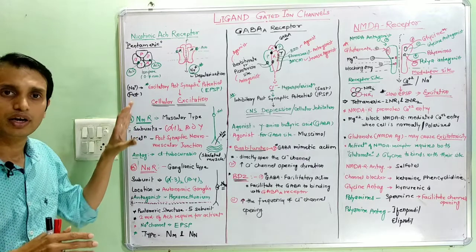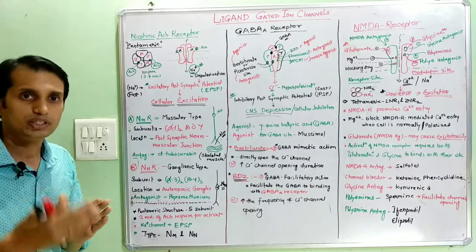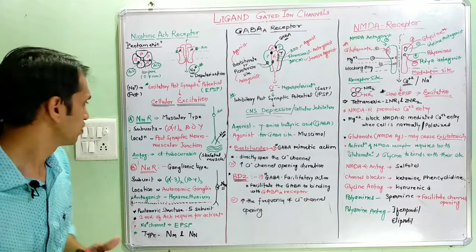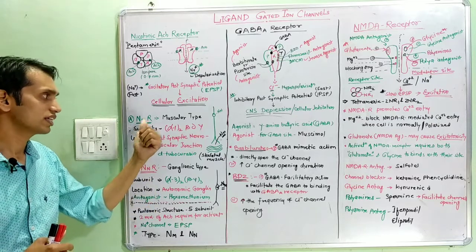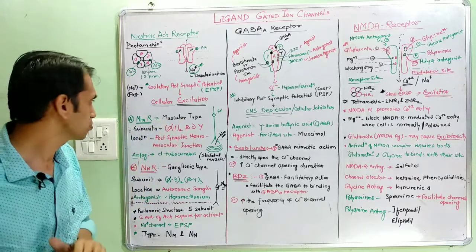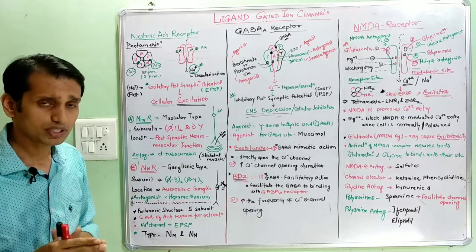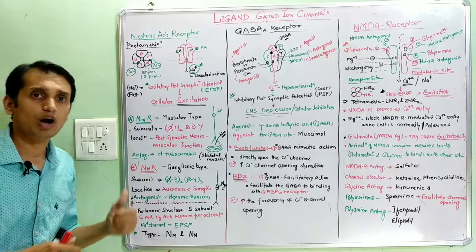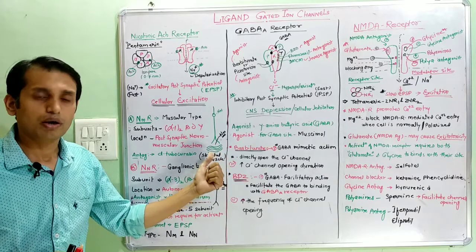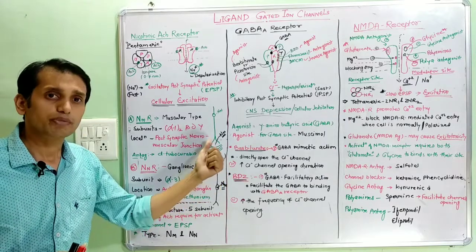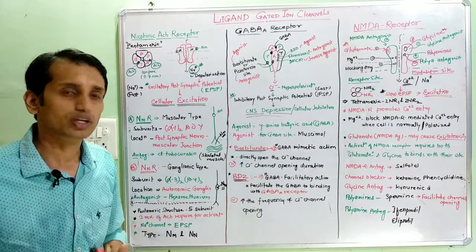Nicotinic acetylcholine receptors are mainly two types. First is the NM receptor, which is a muscular type — found at the post-synaptic neuromuscular junction, between neurons and effector organs like skeletal muscles. NM receptors are involved at the neuromuscular junction.